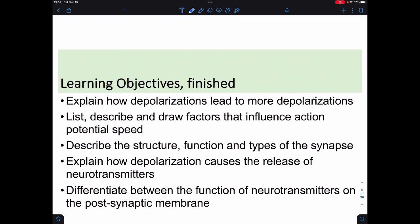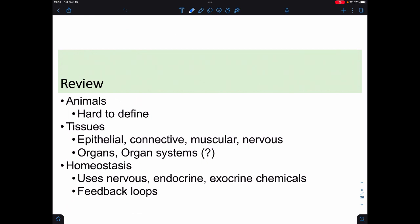Seems like a lot. So last time we defined animals, or at least we attempted to, we talked about animal tissues, and how most animals have epithelial, connective, muscular, or nervous tissues. We also dealt with the concept of organ systems and homeostatic mechanisms using nervous, endocrine, and exocrine components. We also looked at positive and negative feedback loops and the fact that they can be complicated.